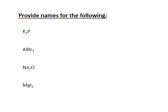Naming ionic compounds is straightforward: you name the metal and attach '-ide' to the end of the nonmetal name. Looking at these examples, we get: potassium phosphide, aluminum bromide, sodium oxide, and magnesium iodide.